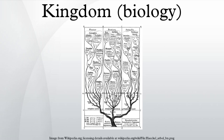It is based mainly upon differences in nutrition. His Plantae were mostly multicellular autotrophs, his Animalia multicellular heterotrophs, and his Fungi multicellular saprotrophs. The remaining two kingdoms, Protista and Monera, included unicellular and simple cellular colonies. The five-kingdom system may be combined with the two-empire system.